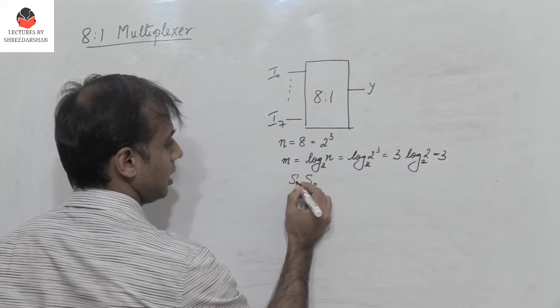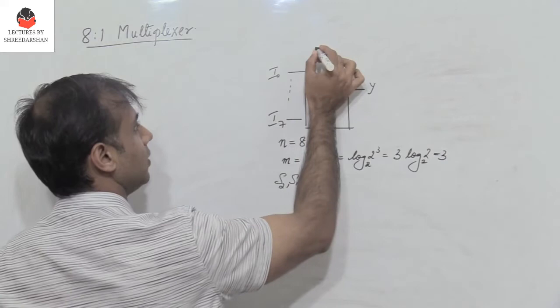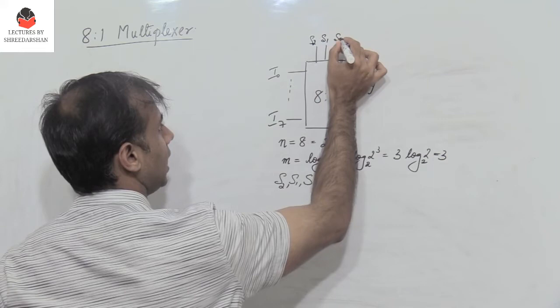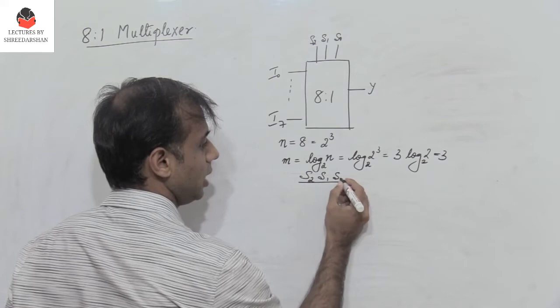s0 is the LSB and s2 is the MSB. Let them be the select lines: s2, s1, and s0. Since there are 8 inputs, we need 3 select lines. I have s2, s1, s0 and the output y.